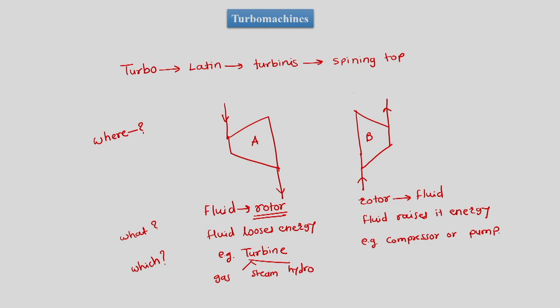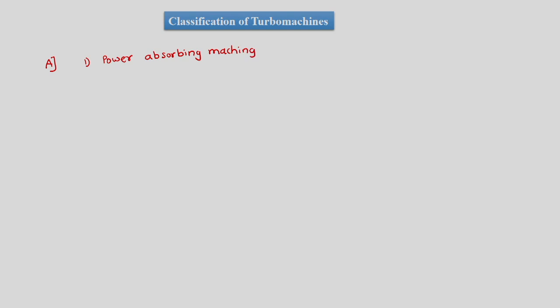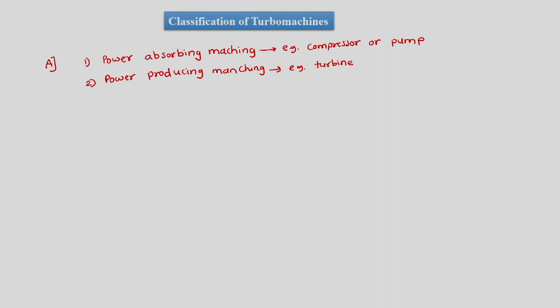Let us start classifying turbo machines. At gross, classification would be: first, power absorbing machines — where the fluid takes energy from the rotor — with examples being compressor or pump. Second, power producing machines — where the fluid loses its energy to the rotor — with the example being a turbine, which can be any type of turbine.